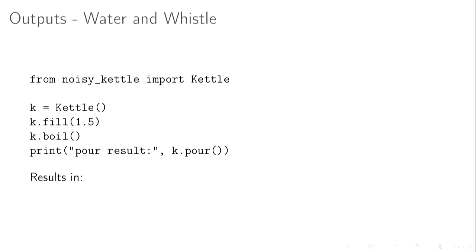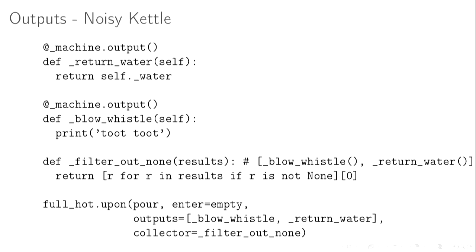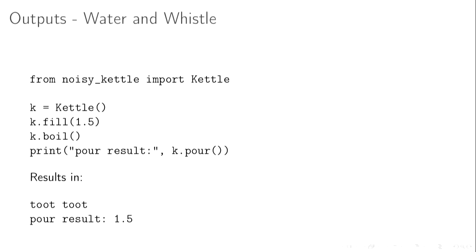With our noisy kettle: we fill it with one and a half liters, boil it, then print the result of pour. We have a print 'toot toot' in blow_whistle, so we see the whistle has been called. And we get our pour result back which is just 1.5 — it's not a list of 1.5, it's just the number.